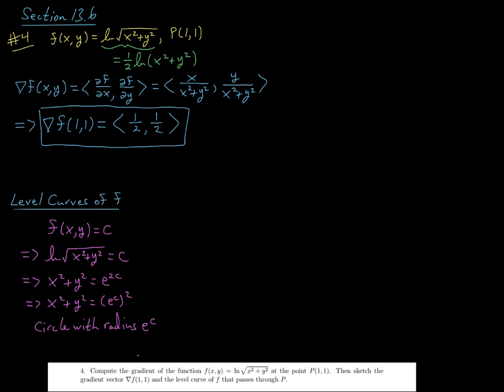So in particular, what's the level curve of f that's going to pass through our point P with coordinates (1,1)? To figure this out, we're going to set x and y both equal to 1. Looking right here, this is going to say that the natural log of the square root of 1 squared plus 1 squared is equal to our c value. This is just describing what the altitude is going to be for the point on our surface directly above this point P. This altitude would be the natural log of the square root of 2, which you can approximate with a calculator. It's about 0.347.